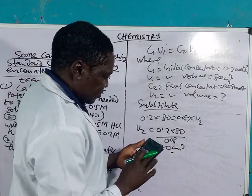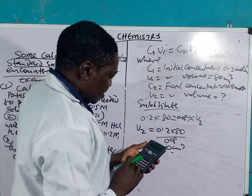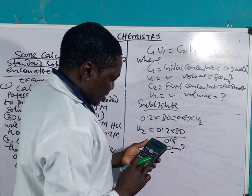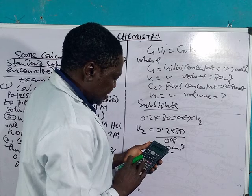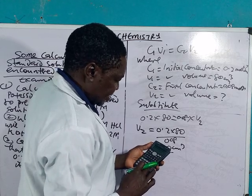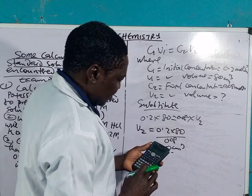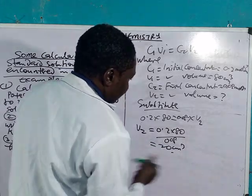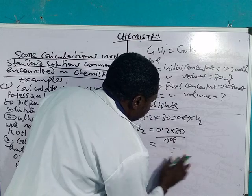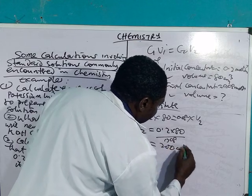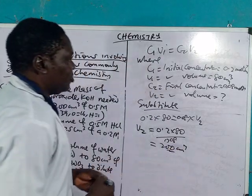0.2 times 80 will give you 16. Divided by 0.08 will give you 200. So this gives you 200 cm³. This is the final volume you have.